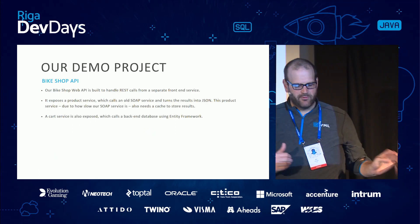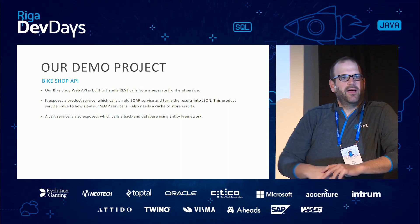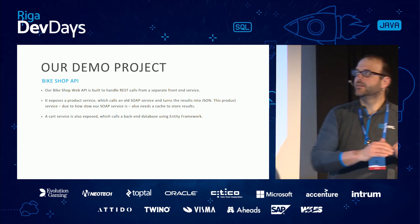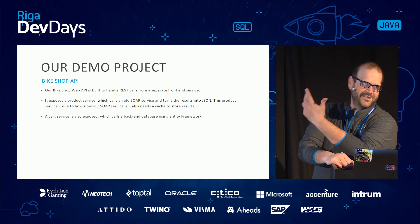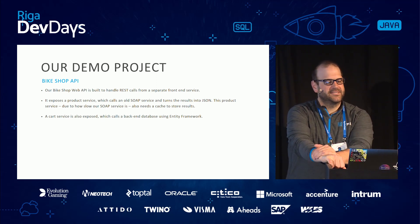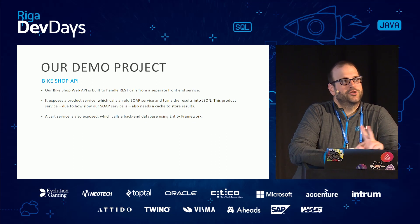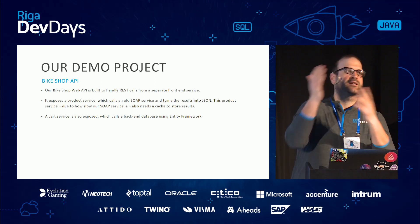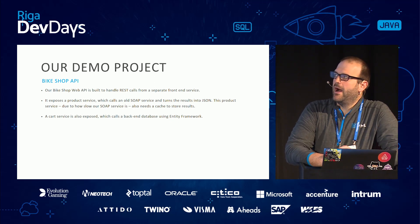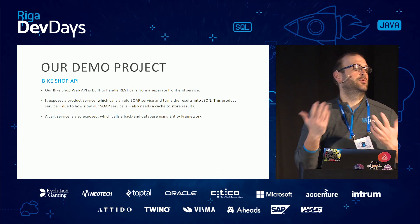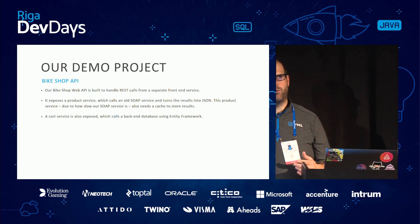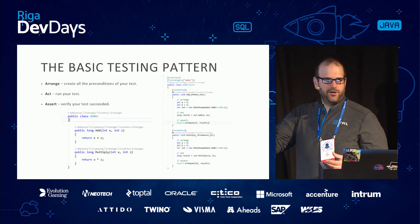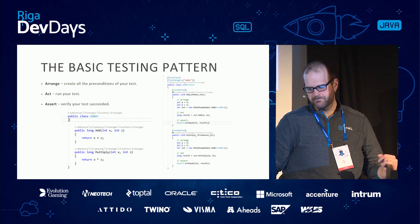The demo project I'm going to show is a bike shop API. It's a bike shop web API built on REST calls with some arbitrary functionality. There are two branches in the code repo: one is ASP.NET Core, the other is classic .NET Framework 4.6. We're going to go over the 4.6 stuff because ASP.NET Core is newer and actually easier to test — I'll point out the differences as we go through the slides.